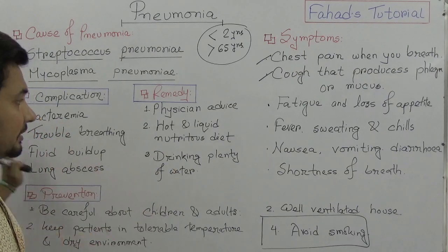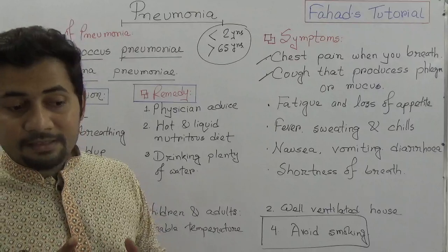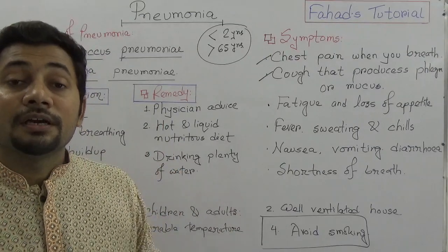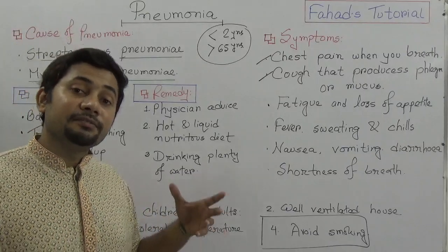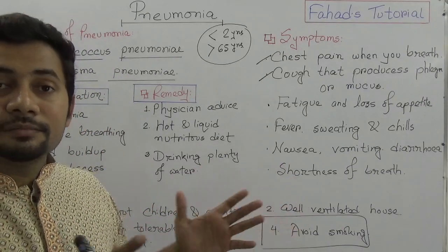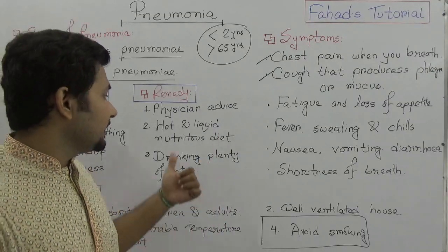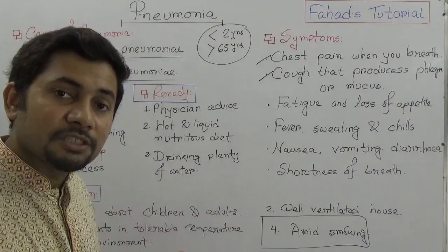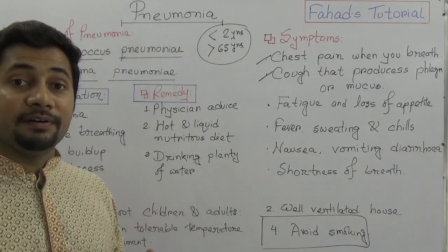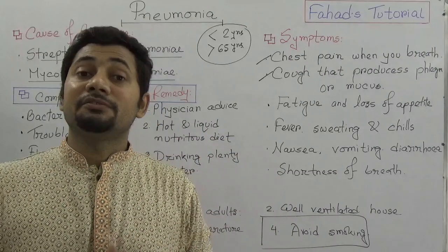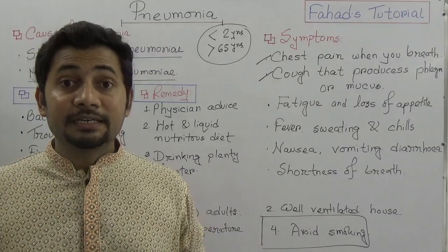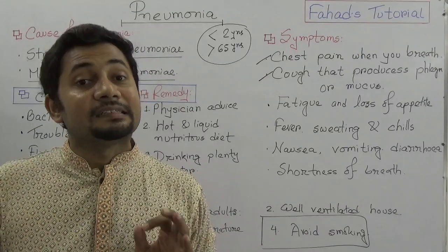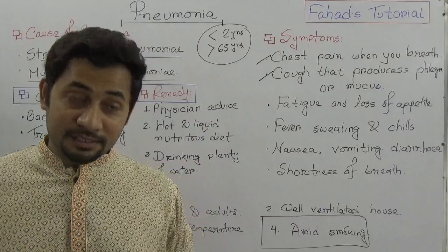For remedies: whenever you see symptoms in kids, old age people, or any age group, directly consult a physician or go to the hospital. The physician will decide whether it is bacterial or viral pneumonia based on tests. A nutritious and hot diet will be advised along with drinking plenty of water. For prevention: keep patients in a well-ventilated, dry, and warm place — not cold. Number one is a balanced, healthy diet and lifestyle; number two is a well-ventilated house; and avoid smoking.